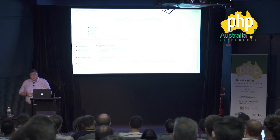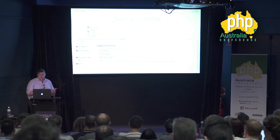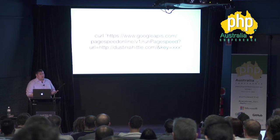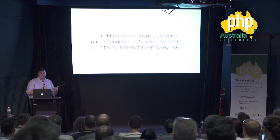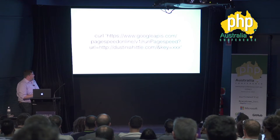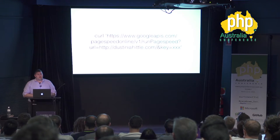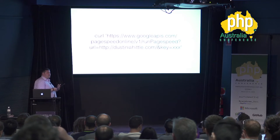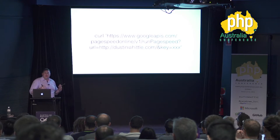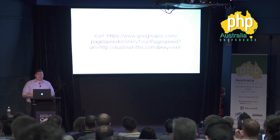PageSpeed has a website where you can throw in a URL and get recommendations like minifying JavaScript and CSS and using HTTP caching headers. There's also a Firefox and Chrome extension for local sites. They have an API — you just need a free Google developer key — which you can integrate into your continuous integration setup. The goal is to write this once and make it part of your build and deployment process, since every deployment changes functionality and impacts performance.